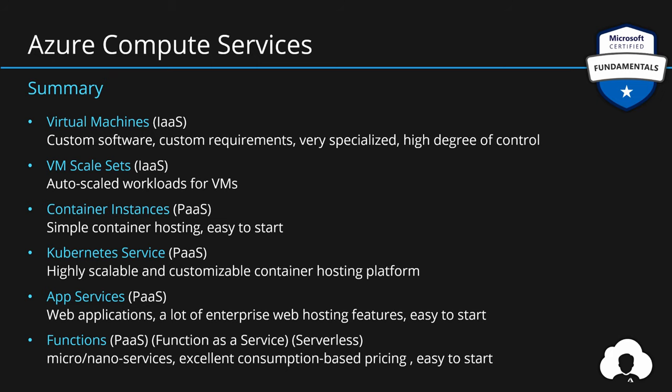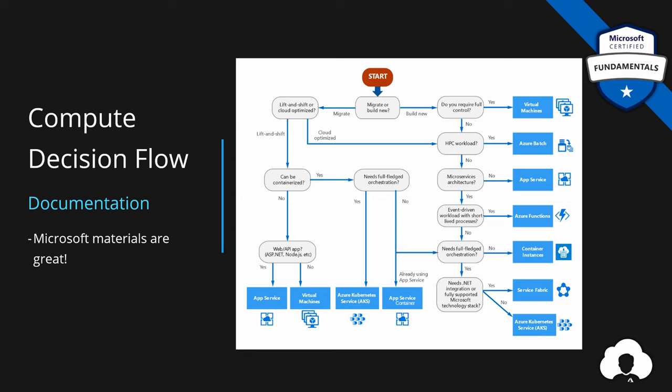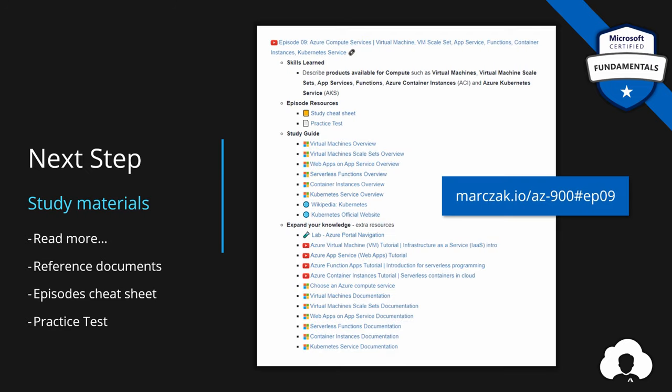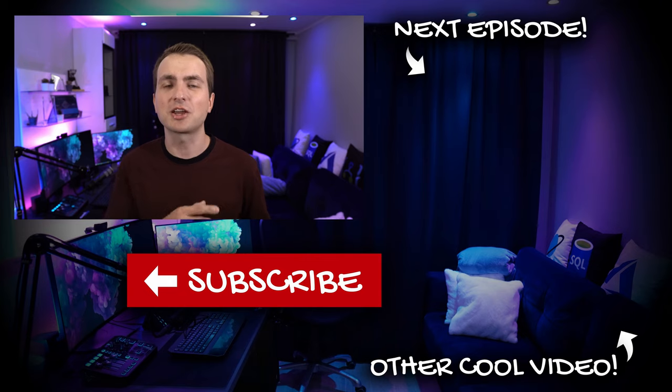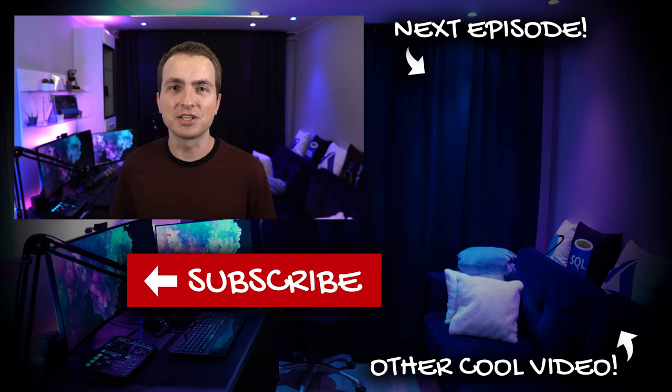This choice is always not so straightforward. For that reason, Microsoft prepared a compute decision flow that helps architects decide which Azure compute services to use for their application, whether migrating an existing application to the cloud or building something entirely new. A link to this will be attached with the episode materials for episode 9 — check out the study guides, expand your knowledge with extra materials and links to other videos on compute services, then check out the cheat sheets and practice tests. That's it for Azure compute services. If you liked this episode, hit thumbs up, leave a comment, and subscribe to support my work. See you in the next episode!